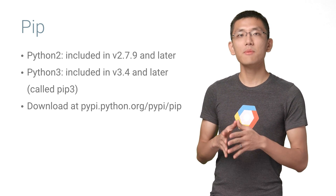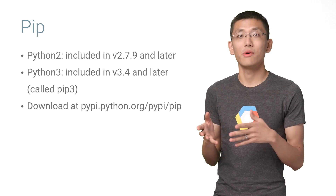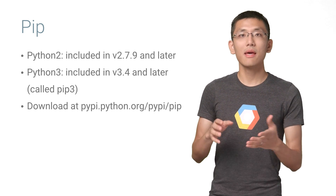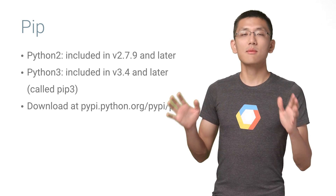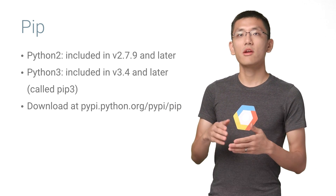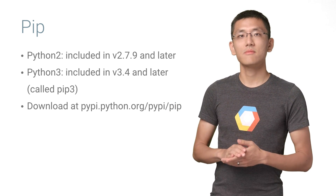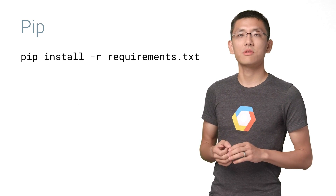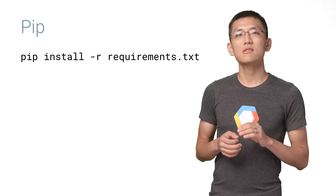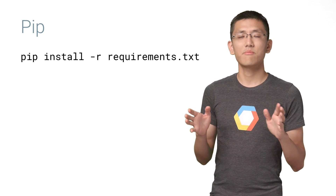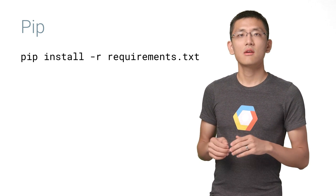PIP installs packages like TensorFlow and NumPy, Pandas and Jupyter, and many, many more, along with their dependencies. Many Python resources are delivered in some form of PIP packages.